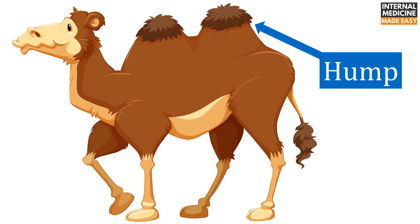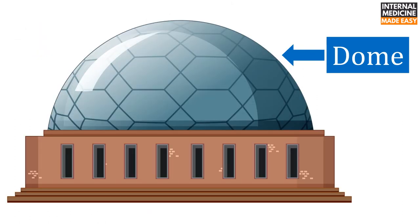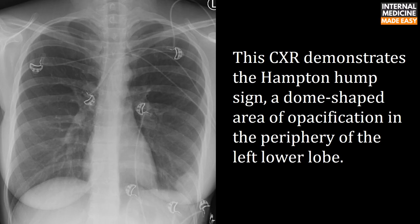An image of a camel hump is shown for comparison, followed by an illustration of a dome shape. This chest X-ray demonstrates the Hampton Hump sign — a dome-shaped area of opacification in the periphery of the left lower lobe.